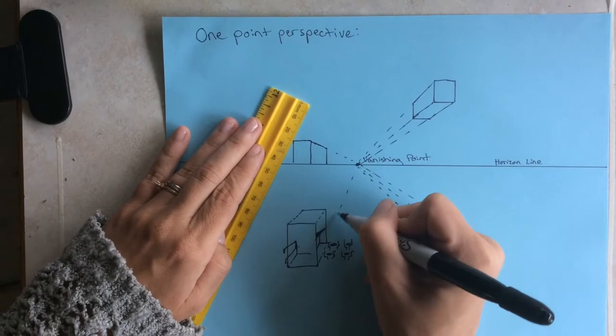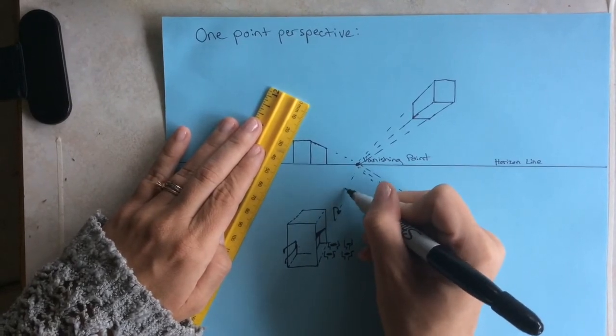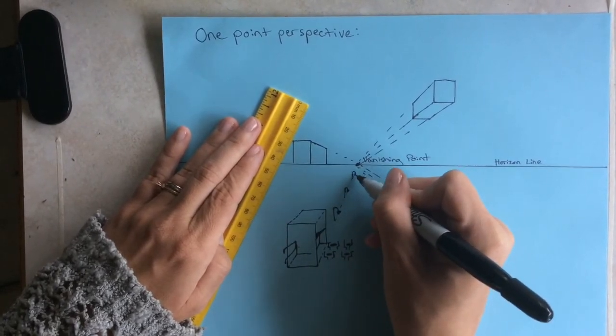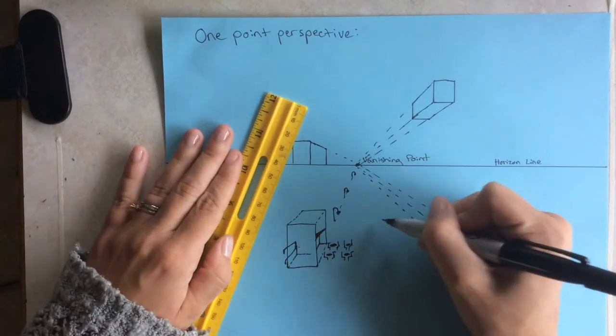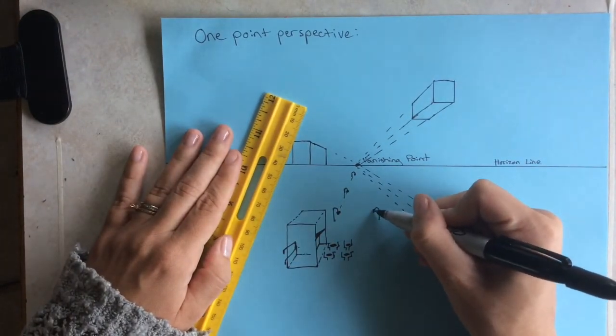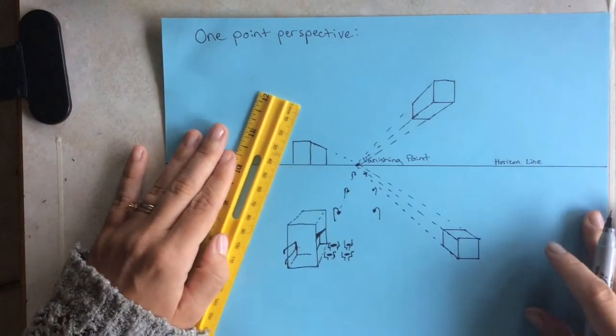And then I can put some light posts in one point. And you can draw a little line to make sure they're all lined up. And you want to get smaller as you go back towards the vanishing point. Whether that be humans or animals or trees or anything you were drawing.